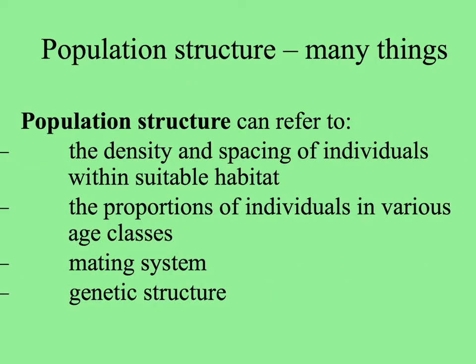The term population structure can mean many different things. It could refer to how individuals are spaced in their habitat and how thick on the ground they are — what their density is. It can also refer to the proportions of individuals in various age classes, or in species where it's difficult to know the age, we might put them into stage classes.